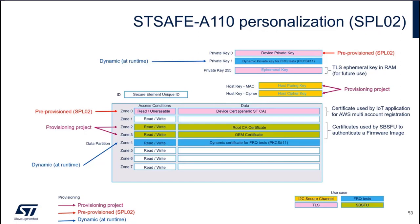Slot 1 is used in the context of the Amazon certification test. This is not something you need when you run the real Amazon application, but when you run the Amazon test application to be certified by Amazon, you need to use this slot.